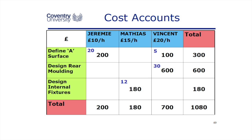We can add up the costs for each task and for each person, and get the total effort to do this part of the project — in this case £1,080. In this picture, the small figures are the hours of effort, and the large black figures are pounds, with a pound sign in the top left-hand corner. This is building up the cost of the project.